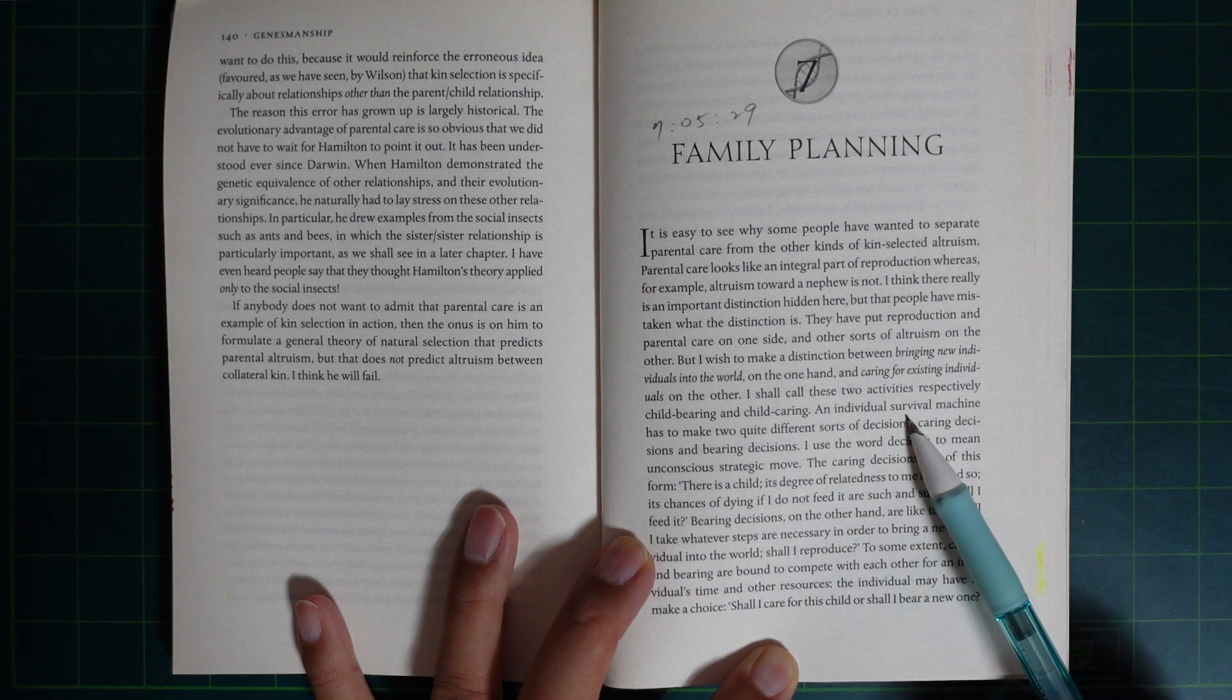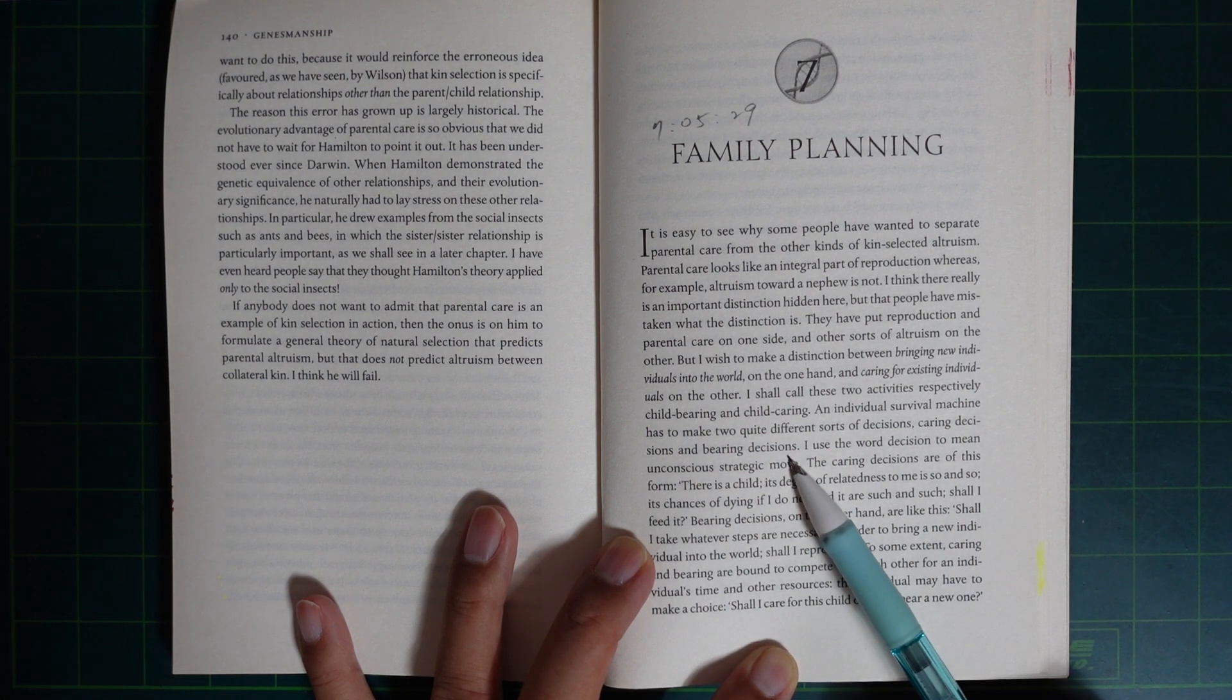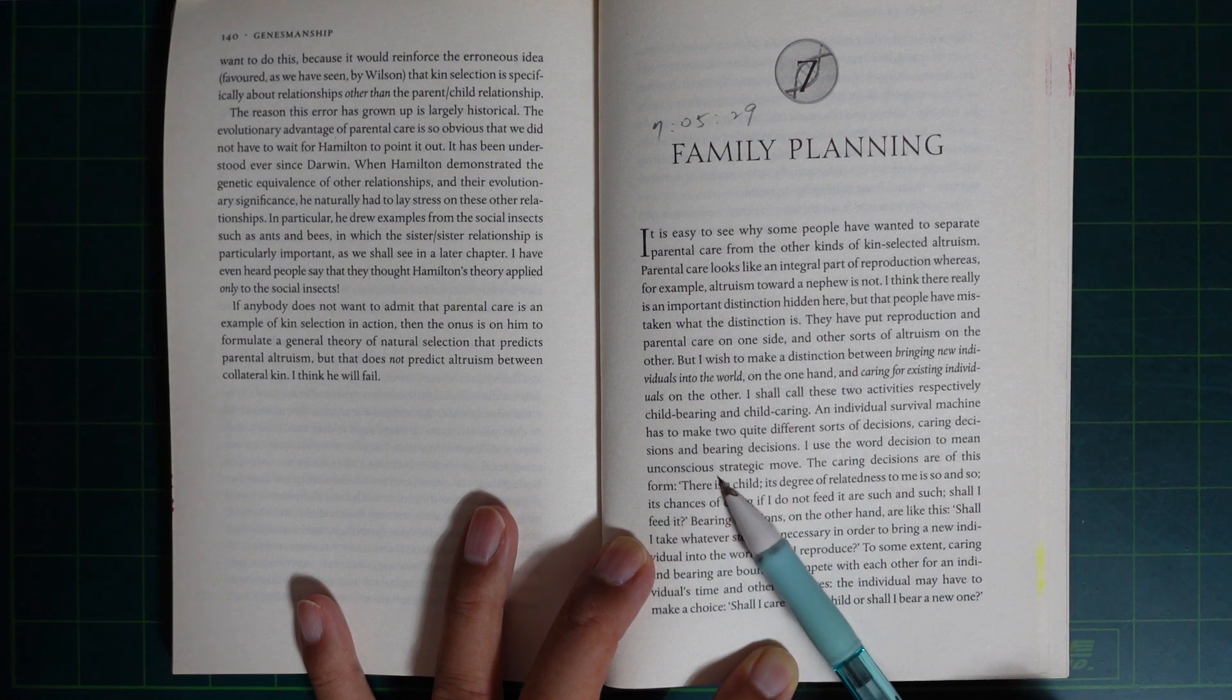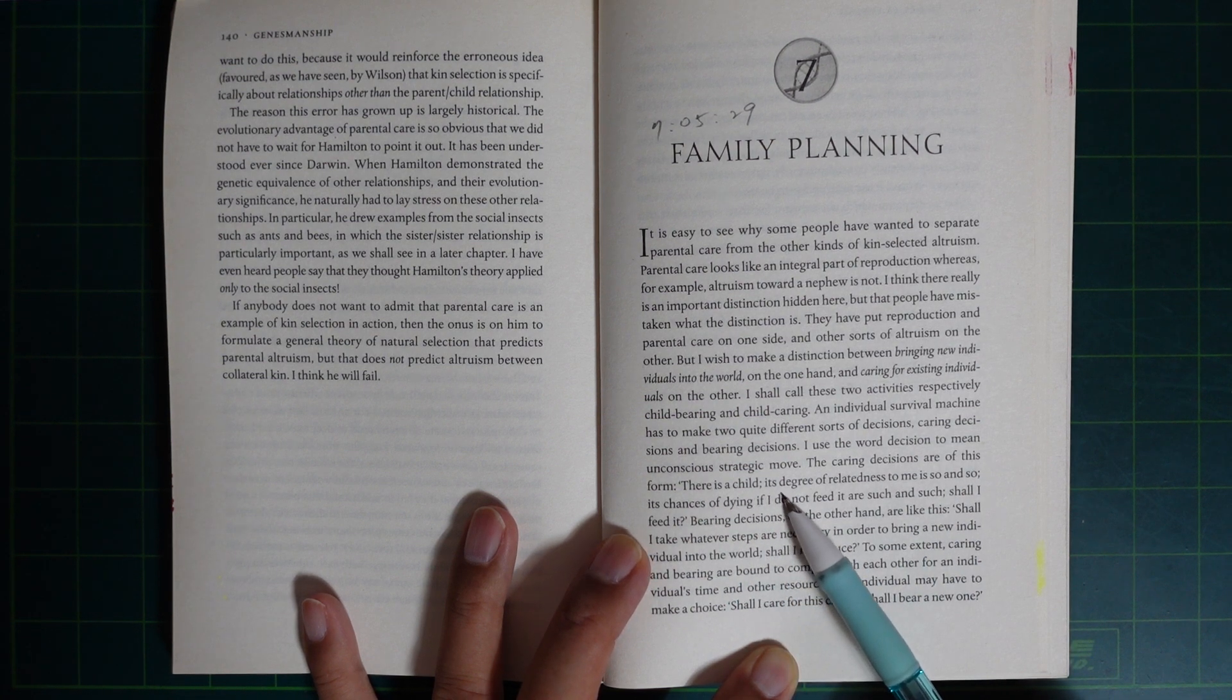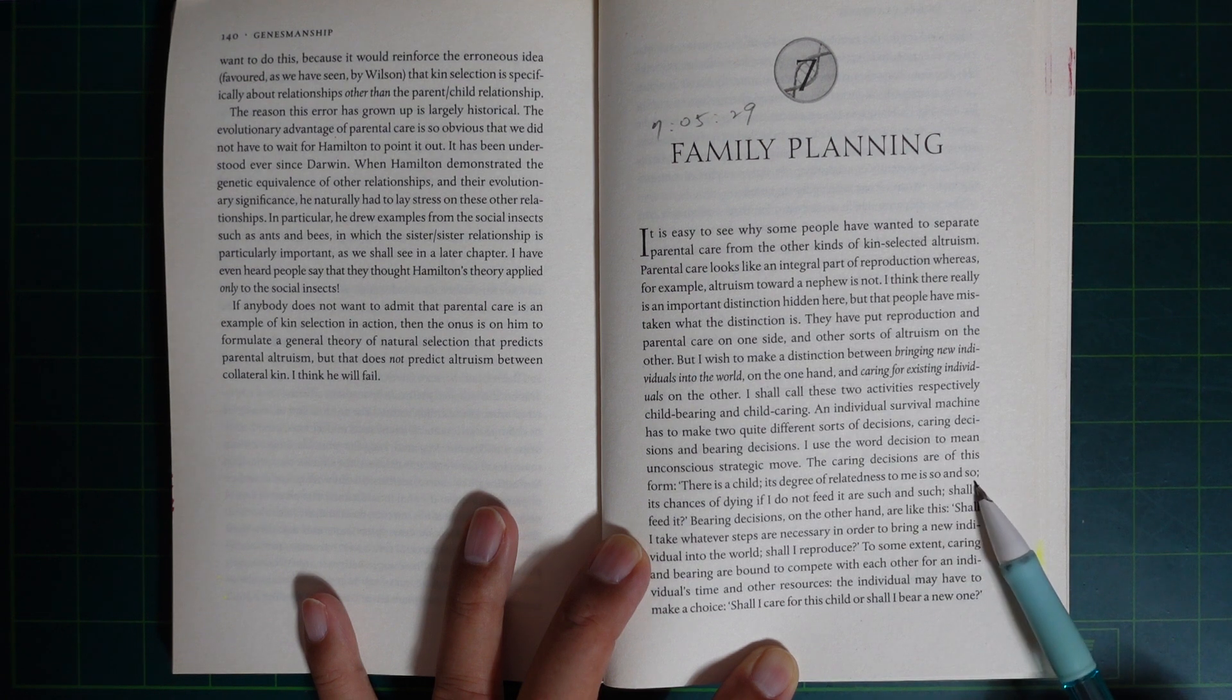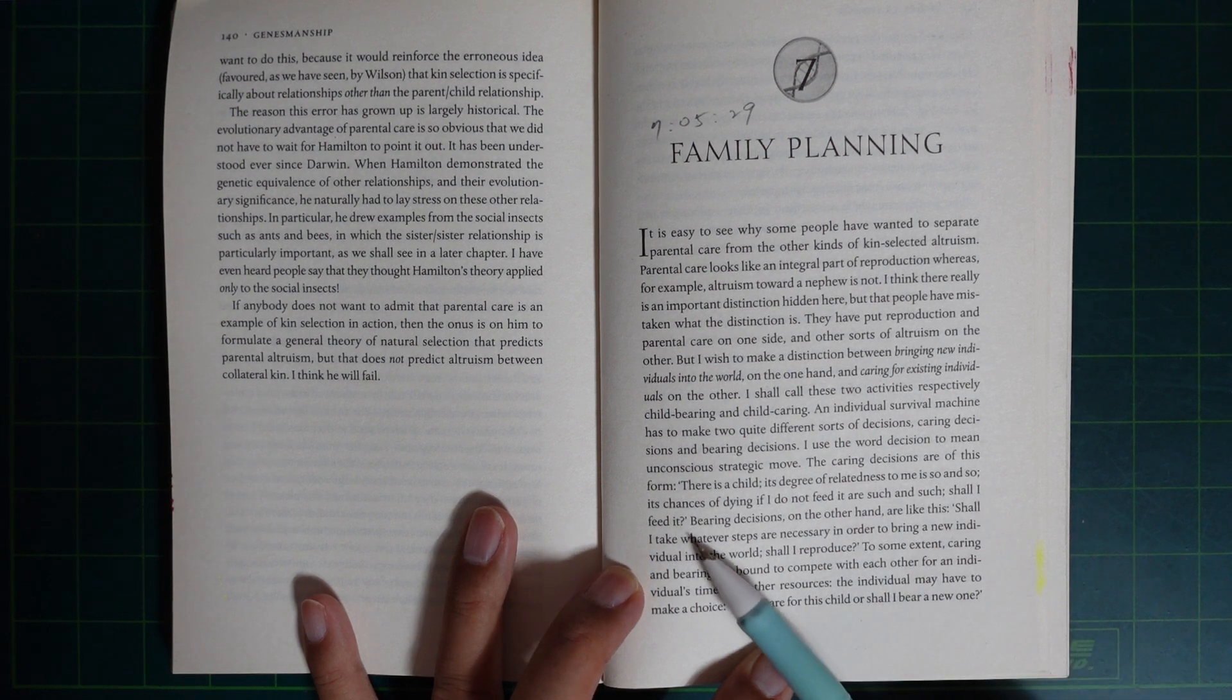An individual survival machine has to make two quite different sorts of decisions. Caring decisions and bearing decisions. I use the word decision to mean unconscious strategic move. The caring decisions are of this form. Here is a child. Its degree of relatedness to me is so and so. The chance of dying if I do not feed it are such and such. Should I feed it?